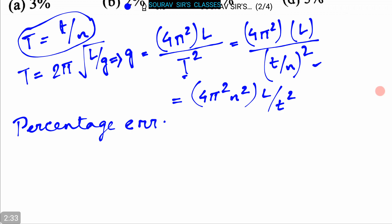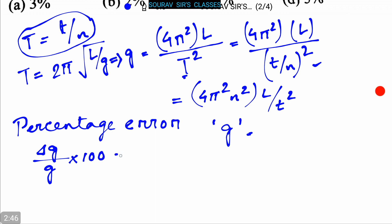The percentage error in the value of g will be: (Δg/g) × 100 = (Δl/l) × 100 + 2 × (Δt/t) × 100.